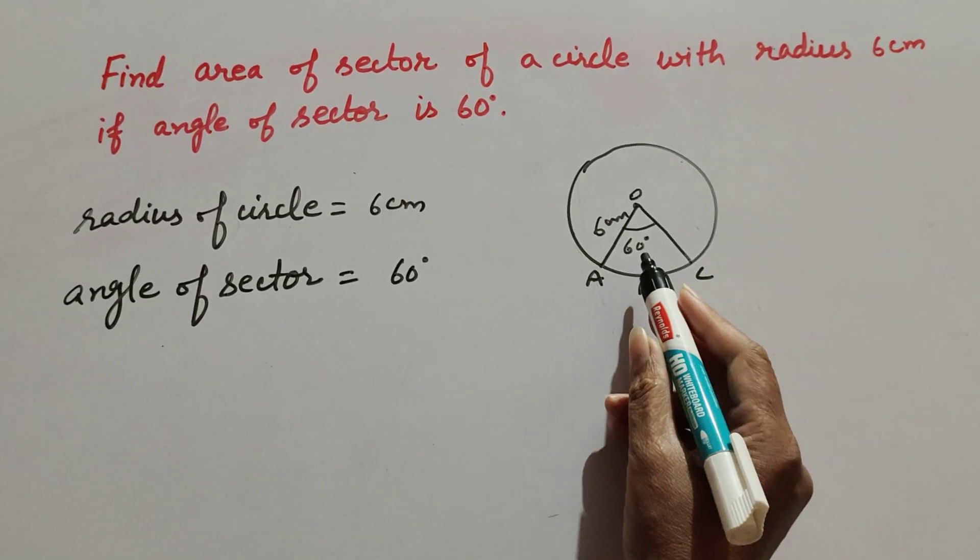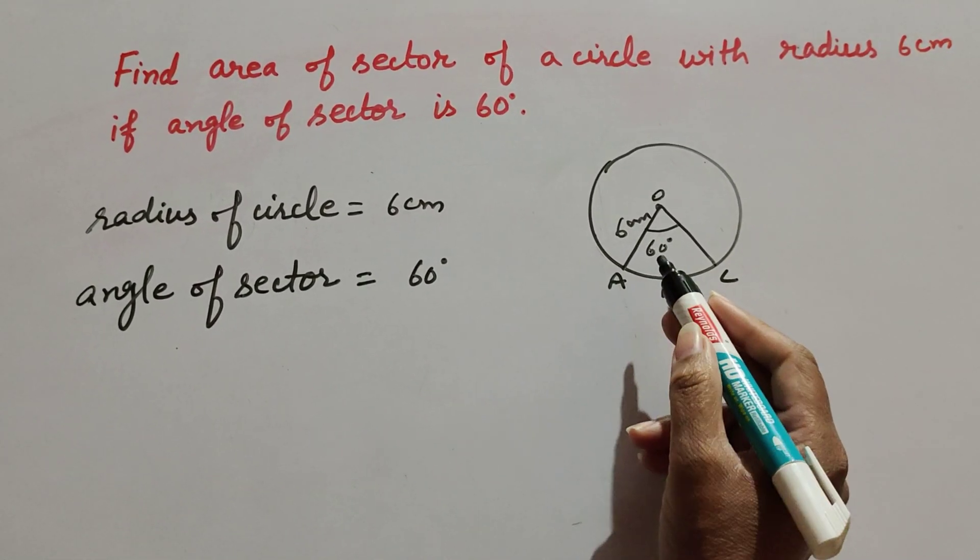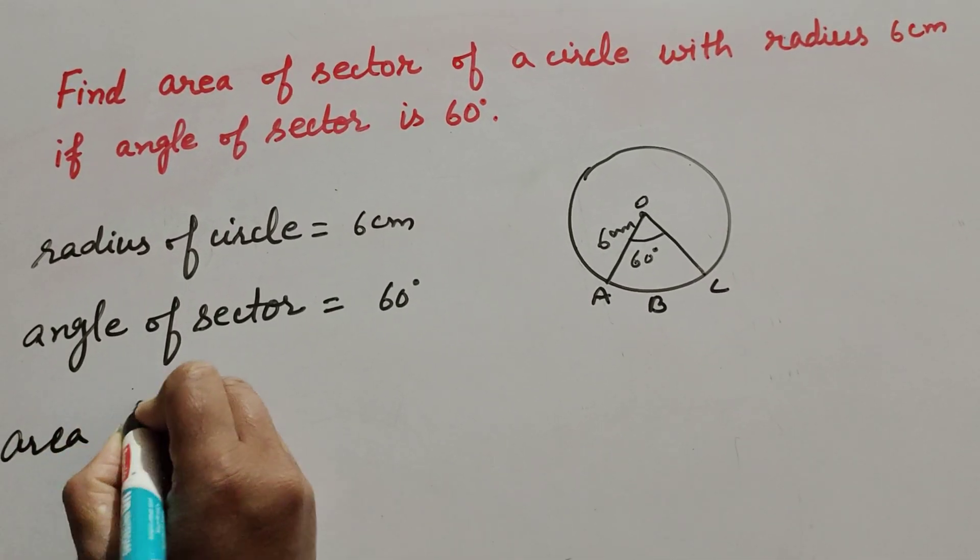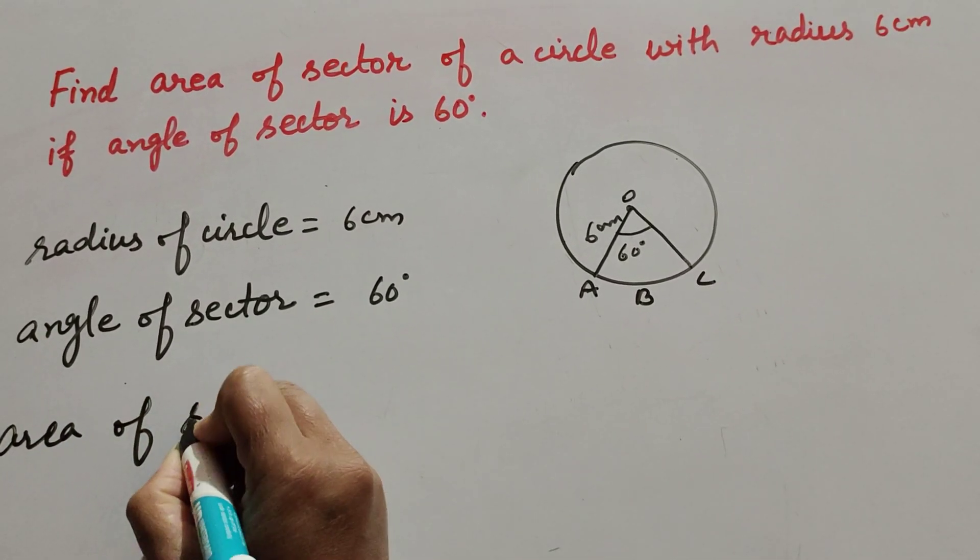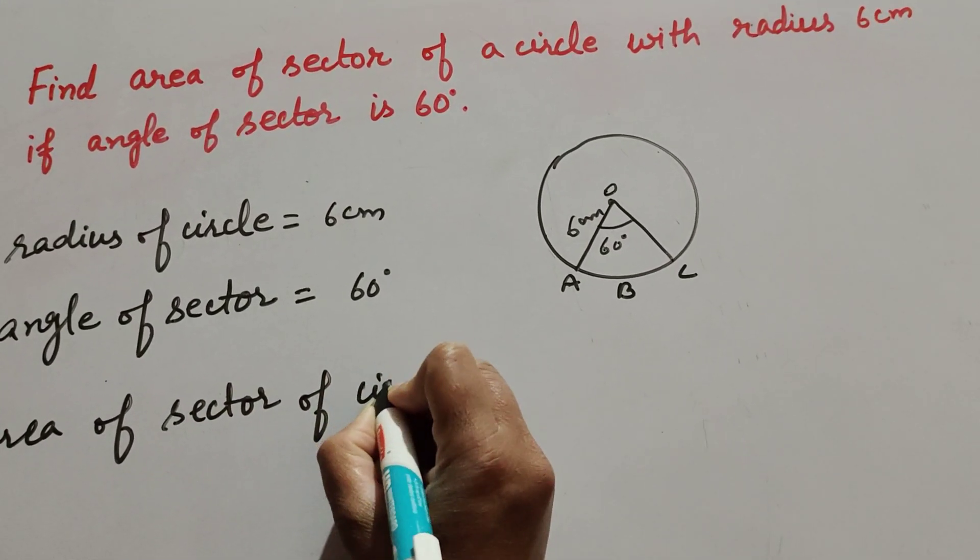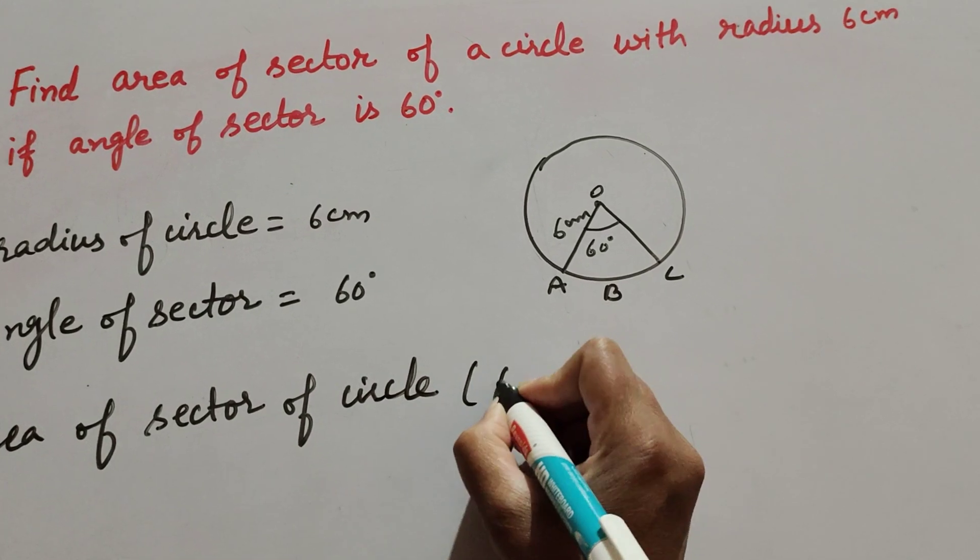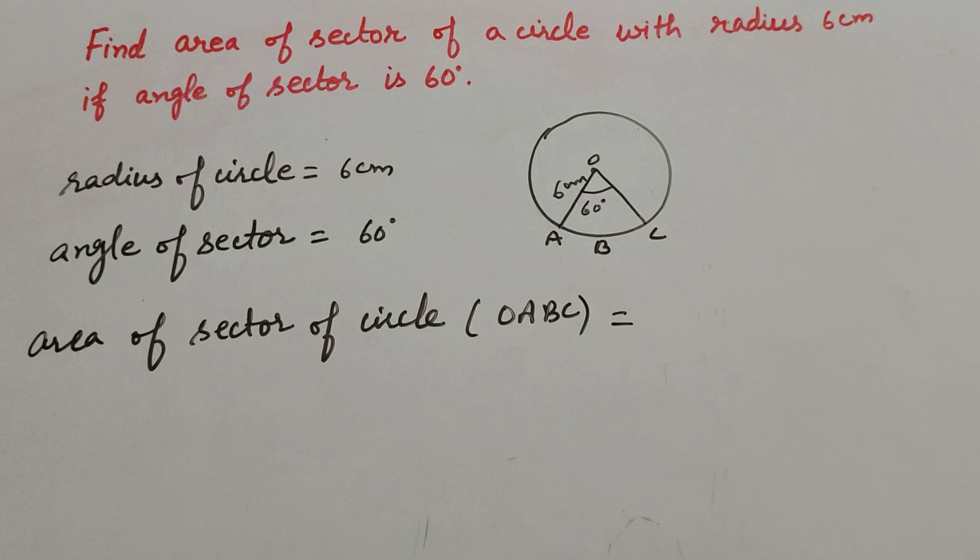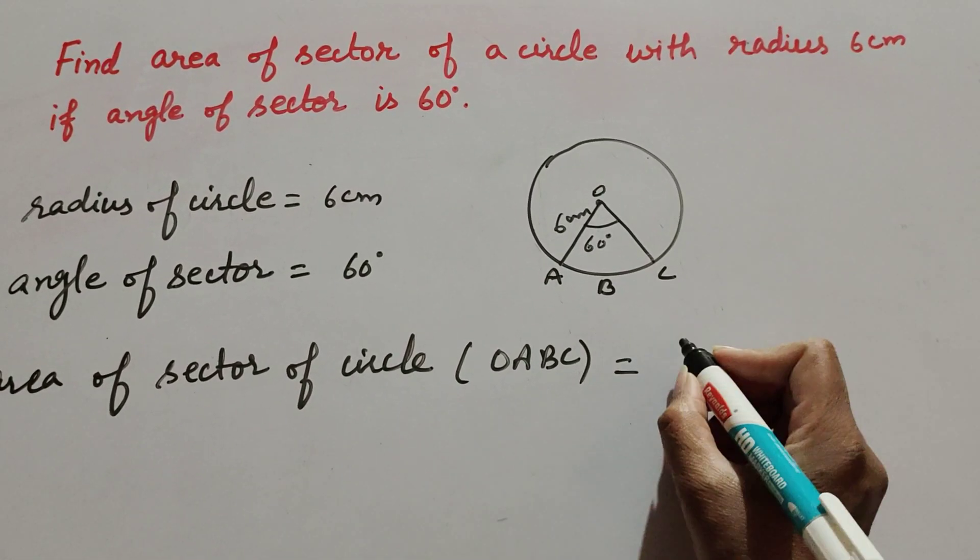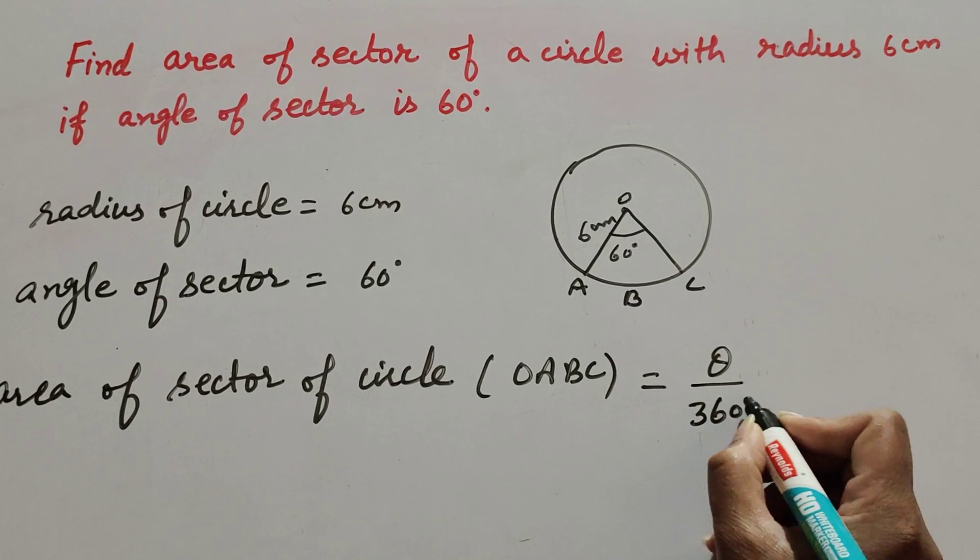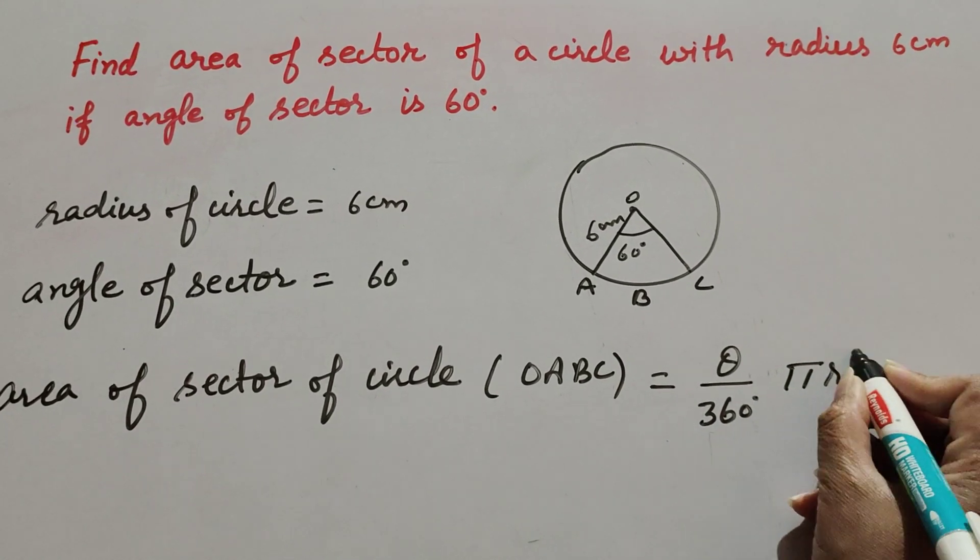We find the area of the sector O A B C. So area of sector of circle O A B C is equal to... We know the formula to find area of sector: it is theta over 360 degrees multiply pi r square.